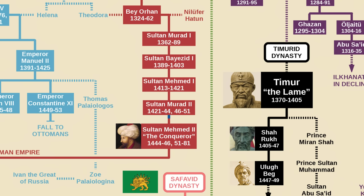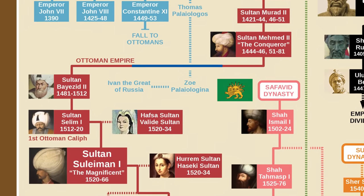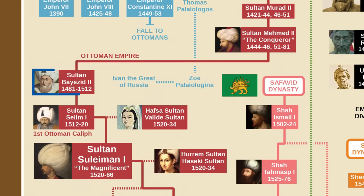After Murad II died, Mehmed II came back to power. He boldly decided to do what no one had been able to do — conquer Constantinople. He did that in 1453, made it the new capital and took the title of the Conqueror, or Muhammad al-Fateh. His son, Bayezid II, is famous for having accepted the Jewish refugees who were kicked out of Spain along with the Muslims. Then after a civil war, his son Selim Yavuz or Selim the Grim ascended to the throne.